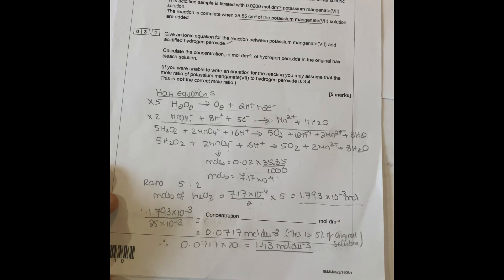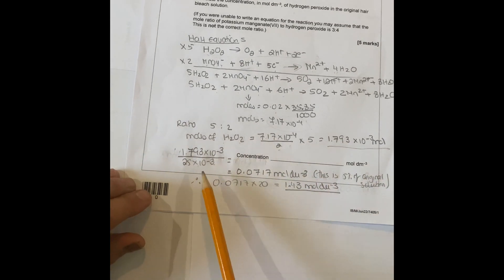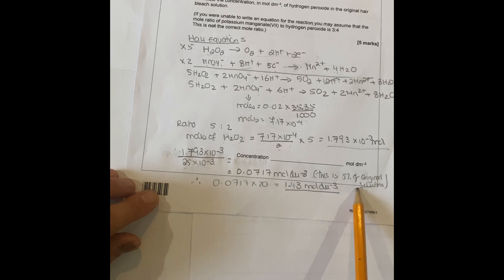It gives you moles of peroxide there. Then you have the moles of peroxide divided by 25, which is your volume. Your moles times 10^-3 because it's divided by a thousand. That'll give you concentration of 0.0717 mol per dm cube. This is five percent of the original solution.